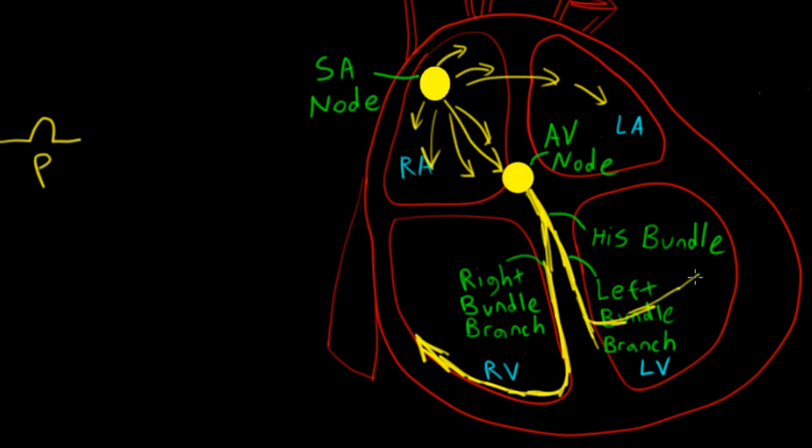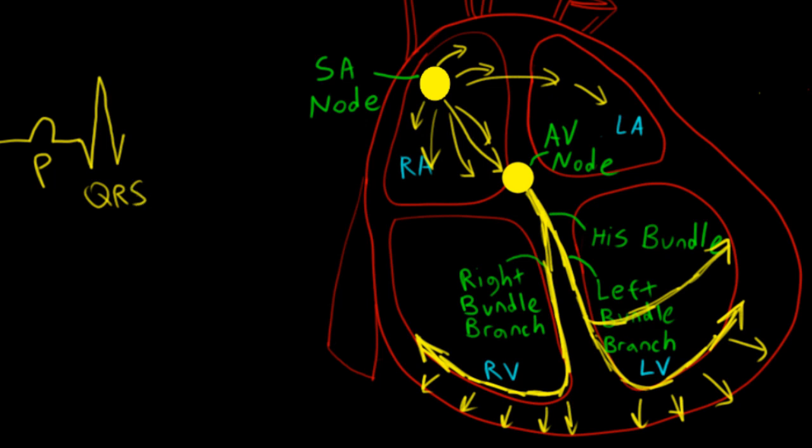On the left side, the left bundle branch divides again into the left posterior fascicle and a left anterior fascicle. Now while all this is going on, our ventricular myocardium depolarizes on both sides simultaneously. This gives us our QRS complex. Now following ventricular depolarization, we get repolarization, which is denoted by our T wave.